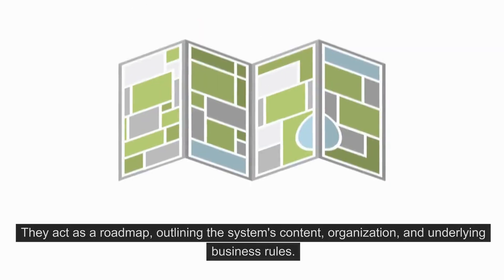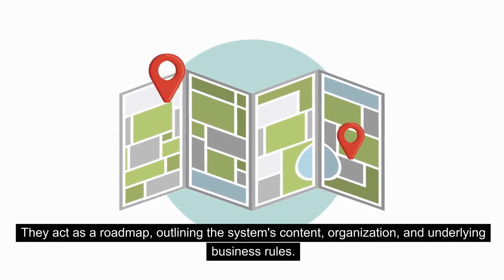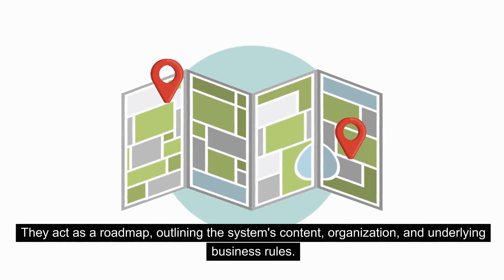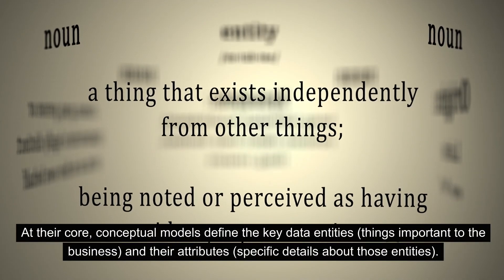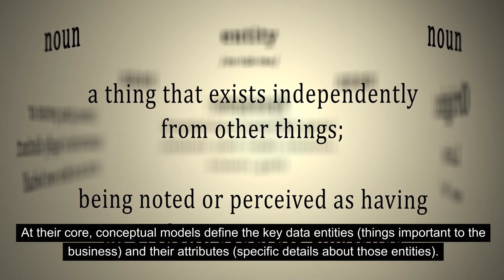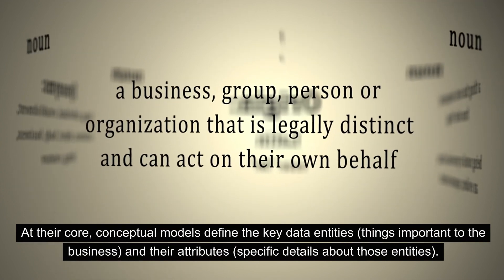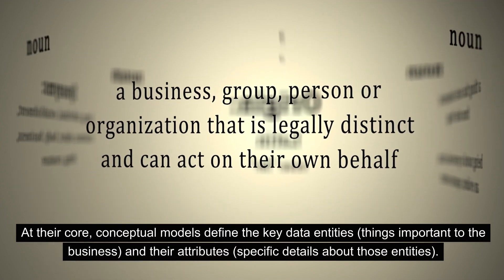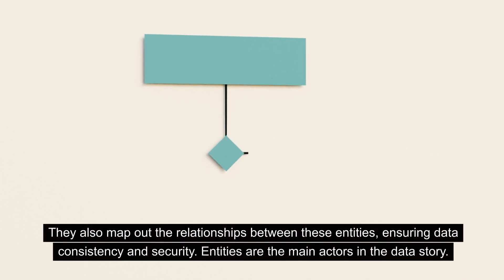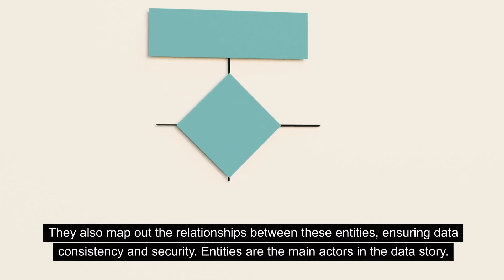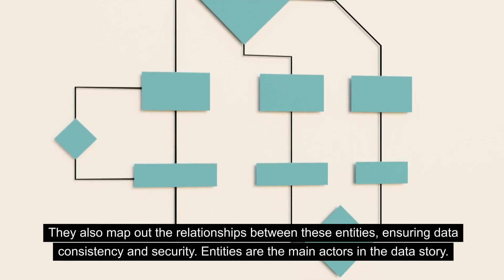They act as a roadmap, outlining the system's content, organization, and underlying business rules. At their core, conceptual models define the key data entities — things important to the business — and their attributes, which are specific details about those entities. They also map out the relationships between these entities, ensuring data consistency and security.